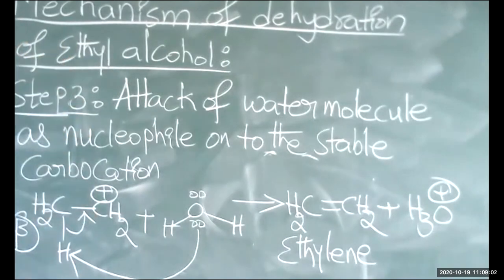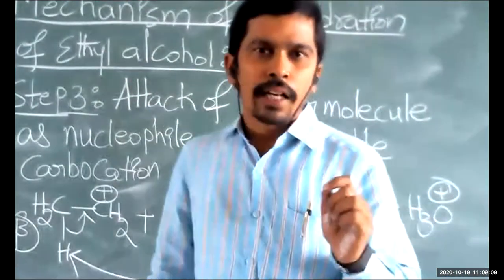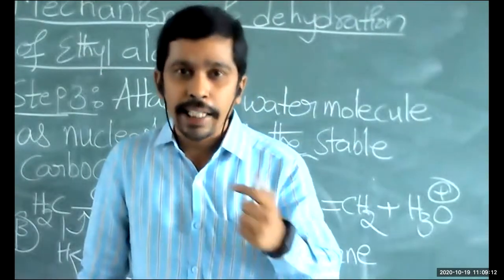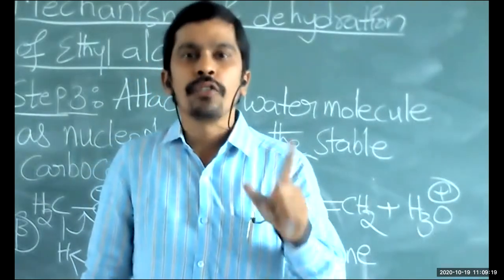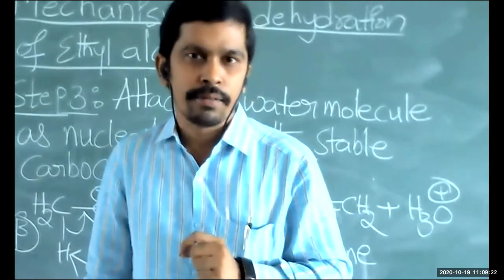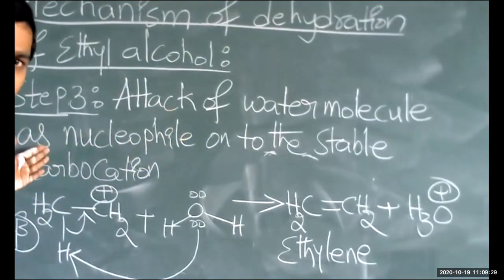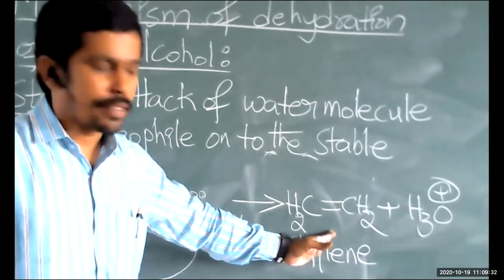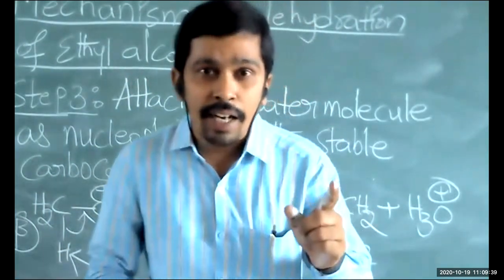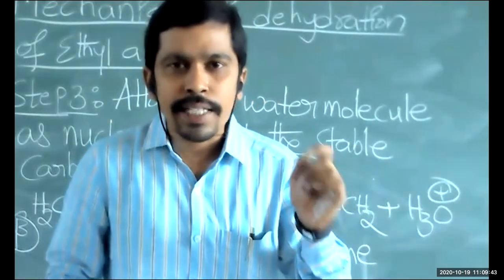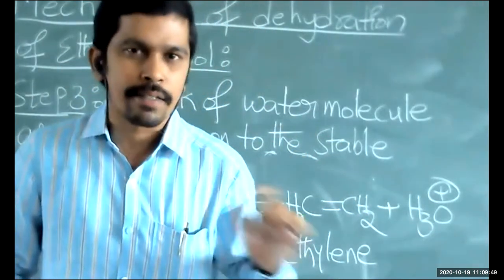This is the dehydration mechanism of ethyl alcohol, having three steps. Step one is protonation of ethyl alcohol to form protonated ethyl alcohol. Step two is dehydration of protonated ethyl alcohol to form a stable carbocation. The third step is the attack of the water molecule onto the carbocation to form the corresponding alkene. Whenever alcohols undergo dehydration, they give the corresponding alkenes.